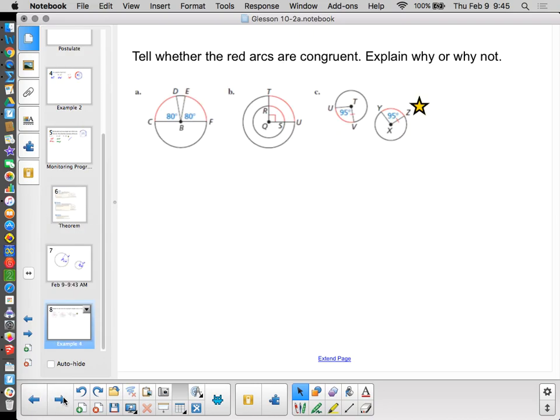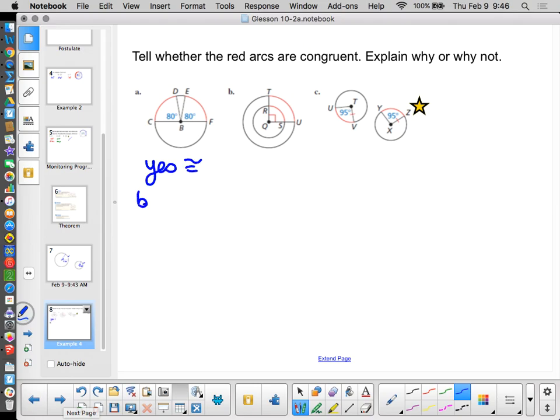So, are the arcs congruent or not? The red arcs. And say, why or why not? So, letter A here. Both arcs measure 80. Both arcs are in the same circle. So, yes, they are congruent because they have the same measure in the same circle.